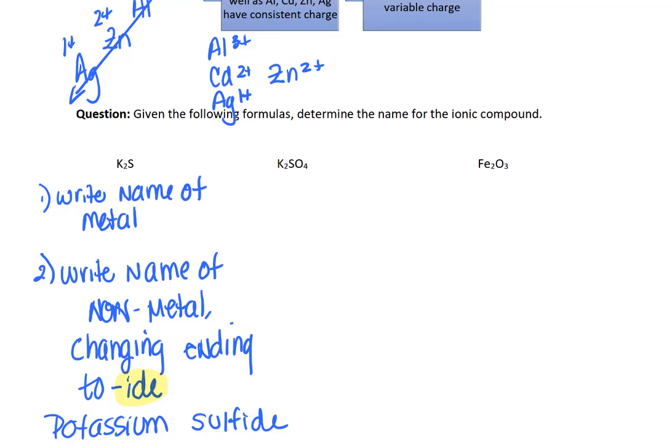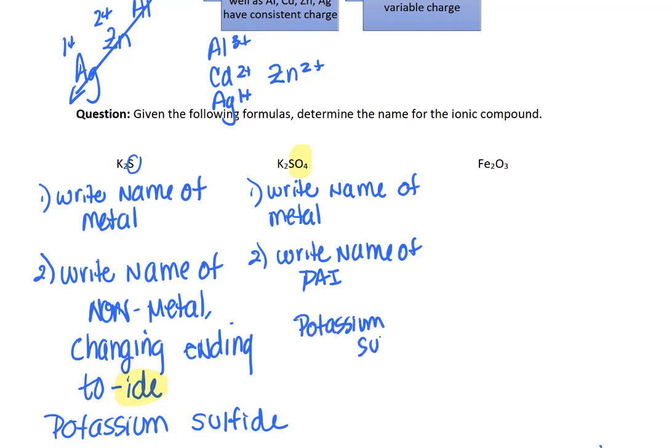So let's do the next one. This one here is a little bit different because you have a polyatomic ion instead of a single atom ion like you did here. So again, we're going to write the name of the metal because this metal always has the same charge. And then you're going to write the name of the polyatomic ion, which if you haven't figured out yet, P-A-I is the abbreviation for polyatomic ion. So you don't need to change anything's ending because if you change the ending of a polyatomic ion, it's no longer that polyatomic ion. So this is sulfate. Just leave it alone. So this is going to be potassium sulfate.